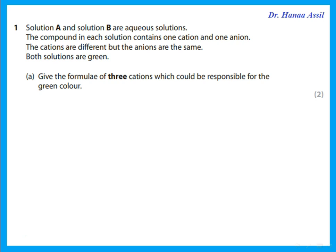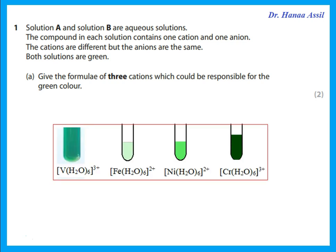Give the formula of three cations which could be responsible for the green color. Colored means it is a transition metal. Which transition metals give green solutions? You should remember V³⁺, Fe²⁺, Ni²⁺, and Cr³⁺ — all of these form green solutions. So you could write the ions V³⁺, Fe²⁺, and Ni²⁺ — any three of them.